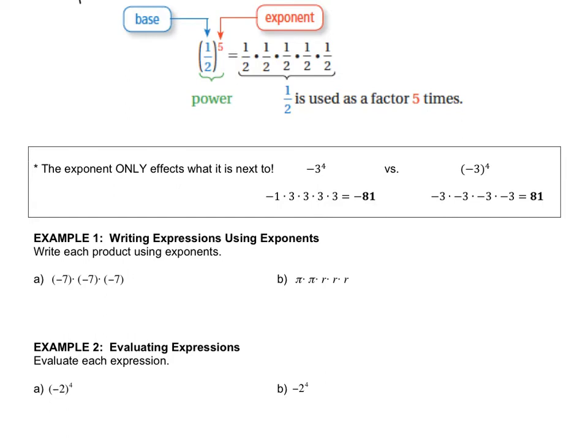So what we're used to seeing would be something like this, negative 3 to the 4th, look over here, and that means negative 3 used 4 times. But without the parentheses, we go over here, and this just means negative 1 times 3 to the 4th.